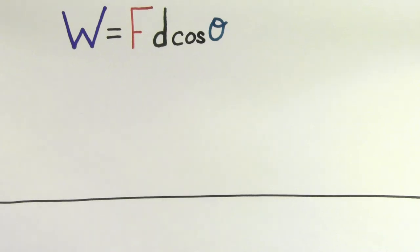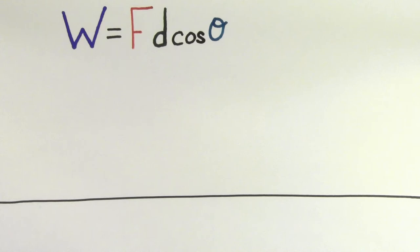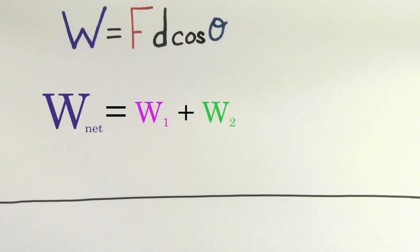This formula represents the definition of the work done by a particular force. But if we wanted to know the net work or total work done on an object, we could just find the individual amounts of work done by each particular force and add them up.